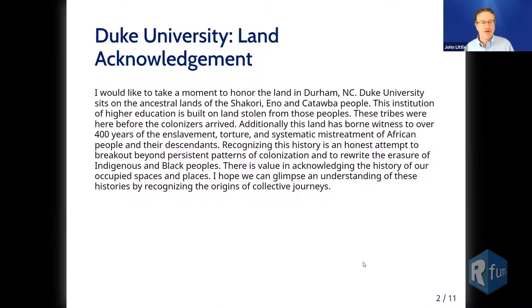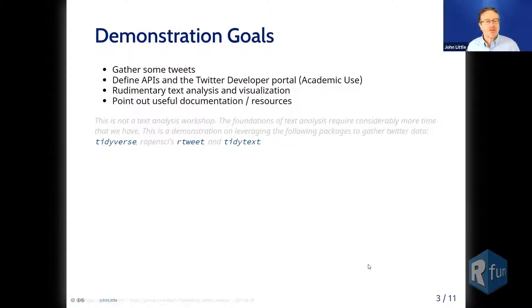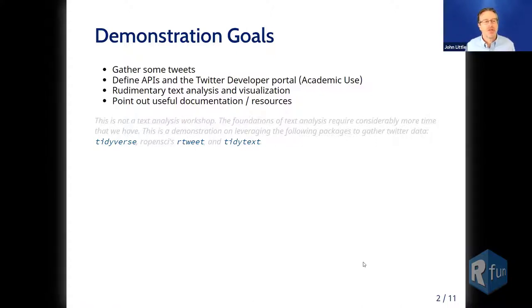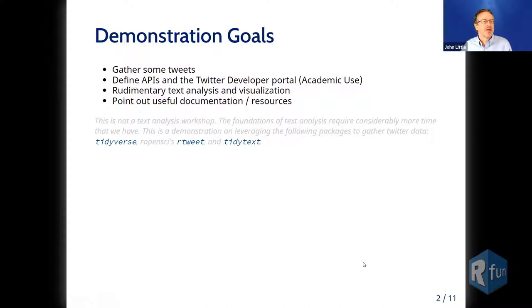That's a very serious thing. There are other very serious things going on in the news today. We're not going to discuss those, but I hope some of this information might help you address injustices you see. Today is a demonstration, and the goals are to gather some tweets — we'll define what an API is, talk about the Twitter development portal, discuss academic access requests, do some rudimentary text analysis and visualization, cover visualizing and geolocating tweets, and point out useful documentation along the way.